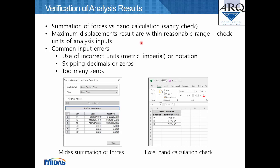Other verifications include checking maximum displacement results to ensure they are within reasonable range — a good check for analysis input units. Extremely large displacements may indicate input errors or model assumption errors. Common input errors include use of incorrect units (metric vs. imperial), skipping of decimals, or having too many or too few zeros in large values. Images show the summation of forces output from MIDAS and a hand calculation of hydrostatic load in X, Y, and Z directions.